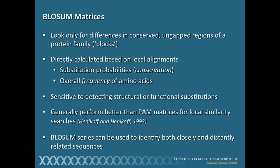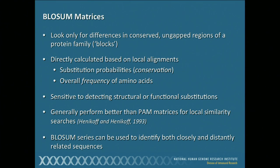Let's talk a little bit more about the BLOSUM matrices. The good news is you never have to construct them yourselves — they're all constructed for you — but it's knowing which ones you have to pick. How was BLOSUM62 constructed? It's looking for differences in conserved, ungapped regions of a protein family. It takes multiple sequence alignments of known protein families, looks for how often residues can substitute for one another and how often they occur — directly calculated based on local alignments, coming up with substitution probabilities and the overall frequency of amino acids. Because of how they've been constructed, they're really sensitive to detecting even subtle changes in structure or function, making them the best performing of the available matrices.